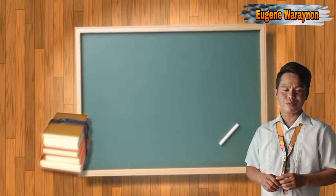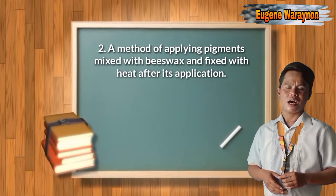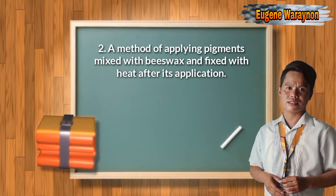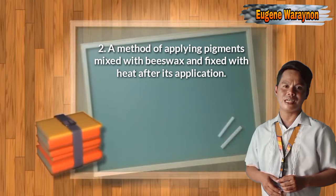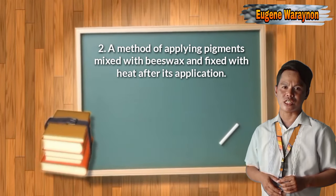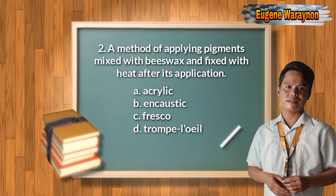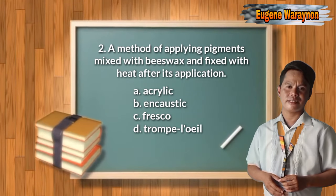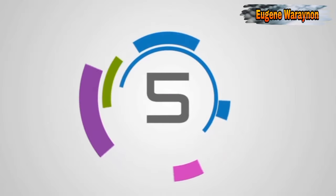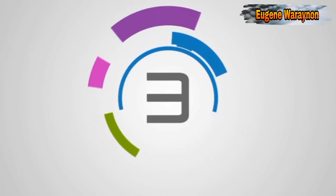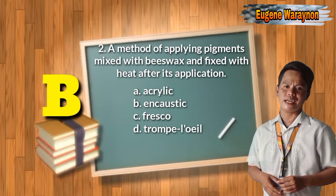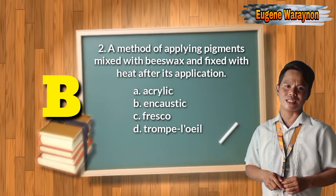Number two: it is a method of applying pigments mixed with beeswax and fixed with heat after its application. A. Acrylic, B. Encaustic, C. Fresco, D. Trompe-l'oeil. The answer is B, Encaustic.